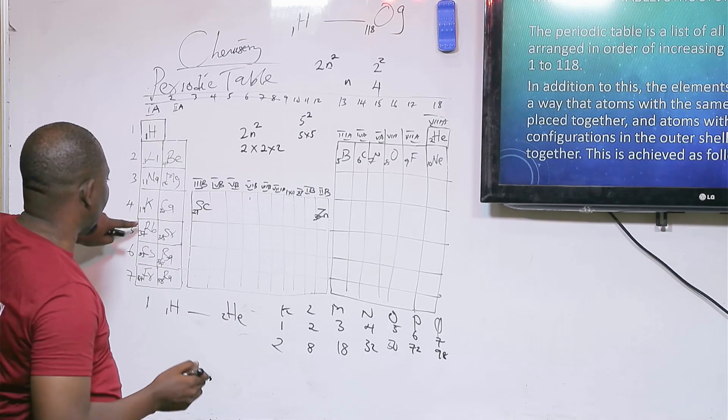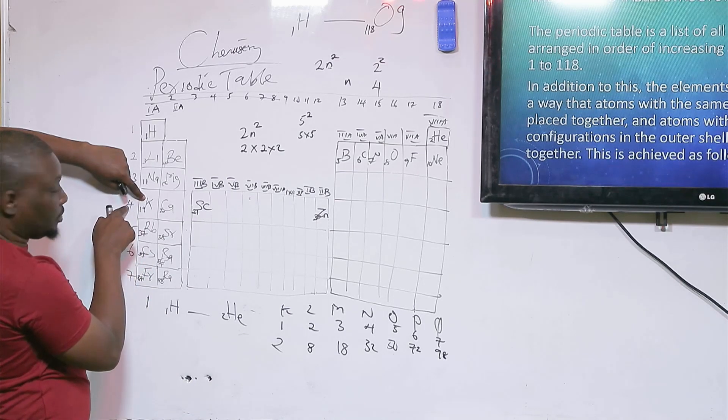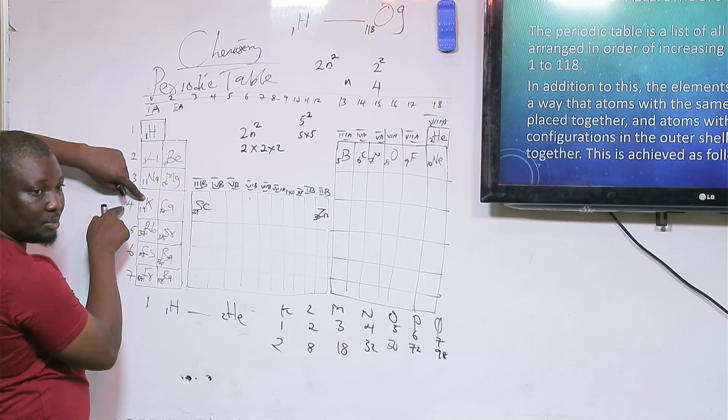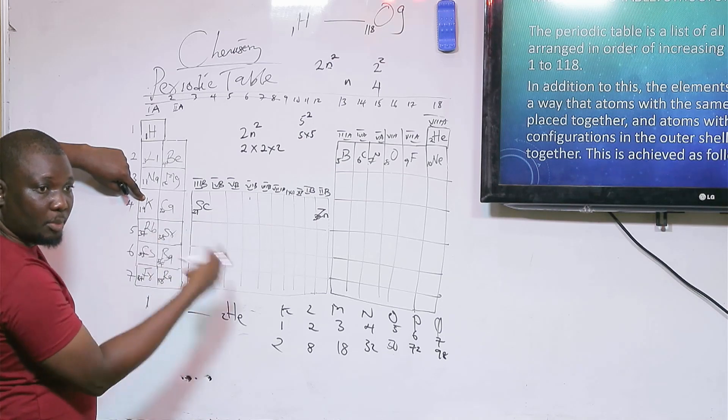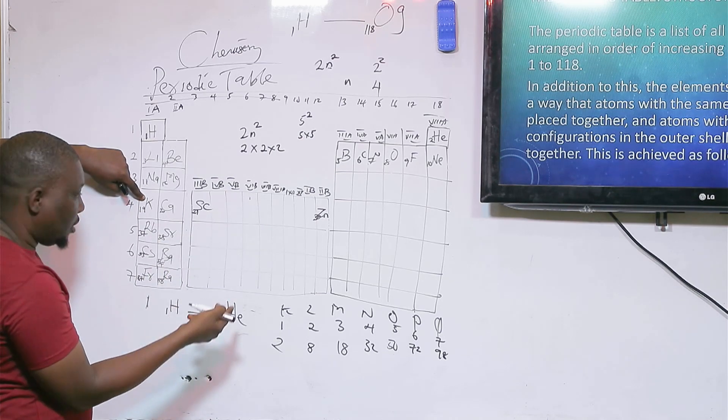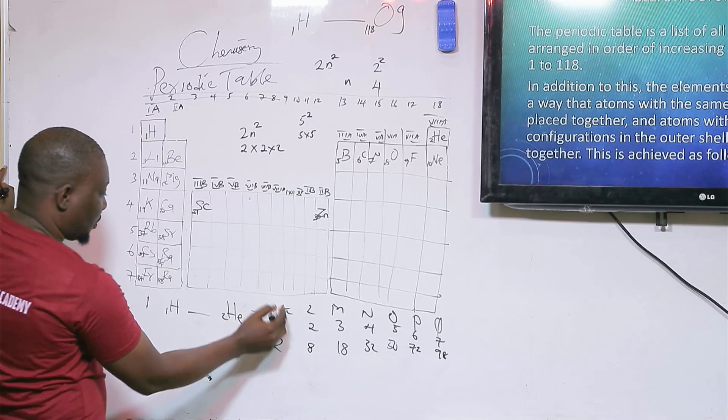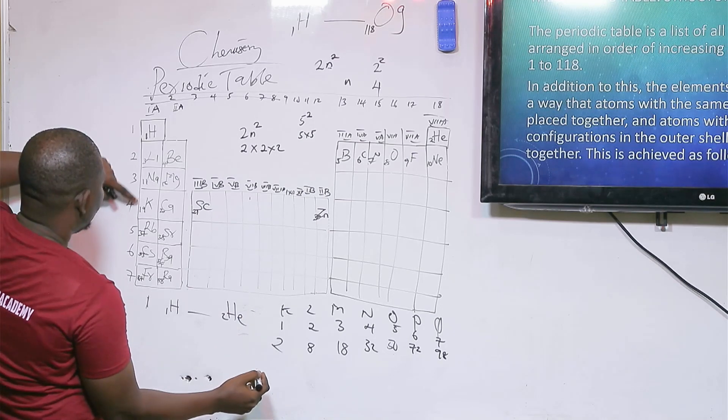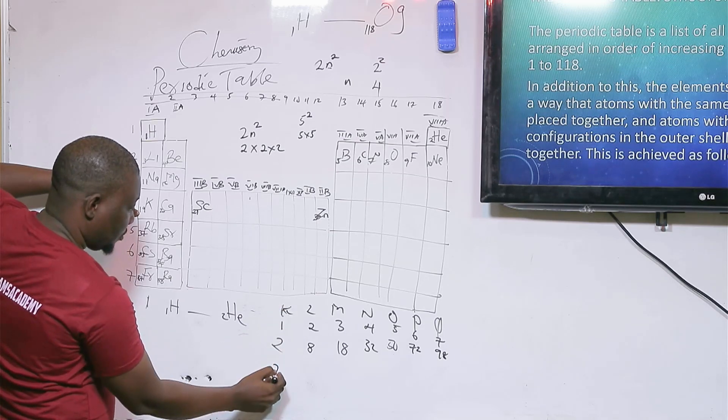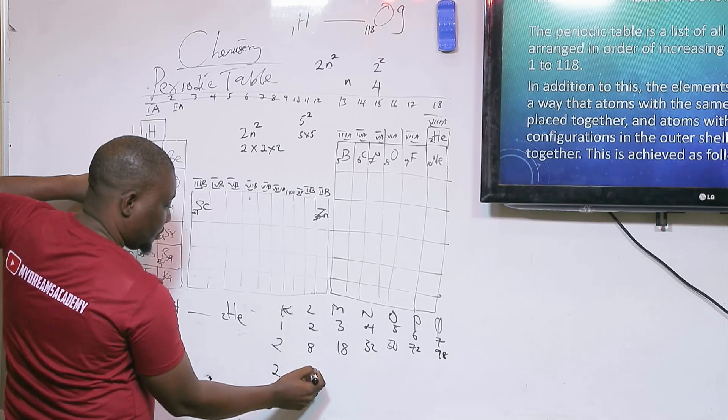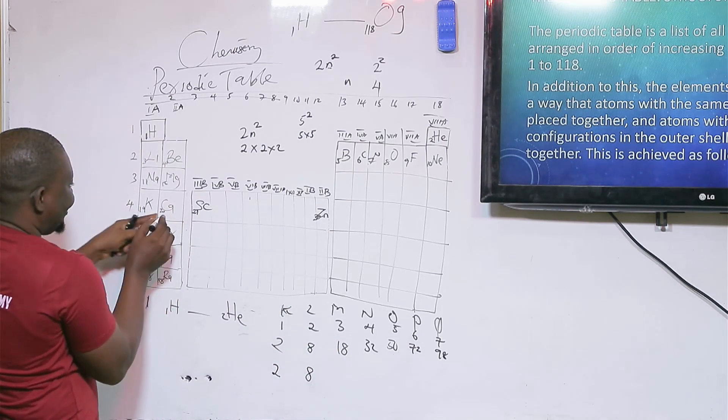Now let's come back to this element, potassium 19. Why is it in period 4? Since the atomic number is 19, let's look at the electronic configuration. For potassium, if we have to configure 19 electrons, how many electrons will be in this shell? Two. How many will be in this shell? Eight. How many will be in this shell?